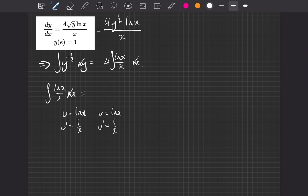So the integral then is going to become log x squared, take away the integral of u dash times by v. So we have log x on x.